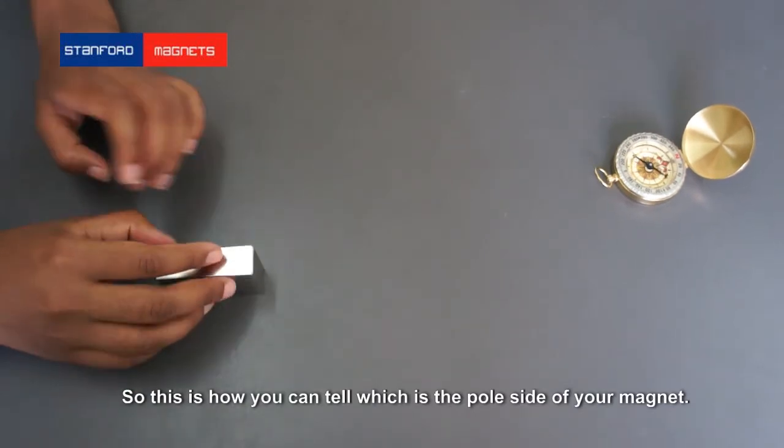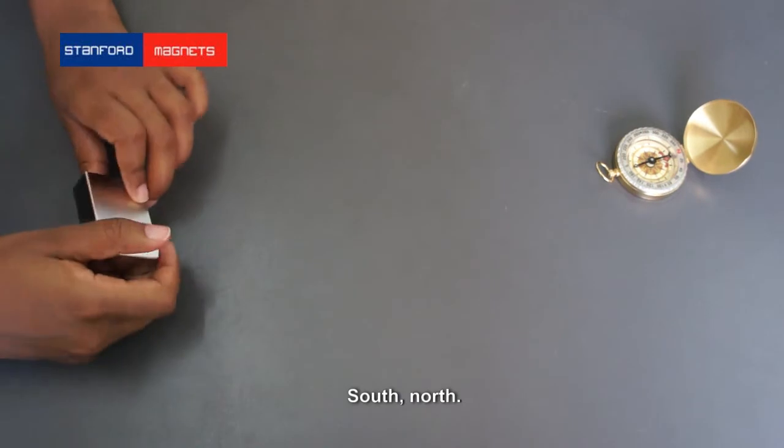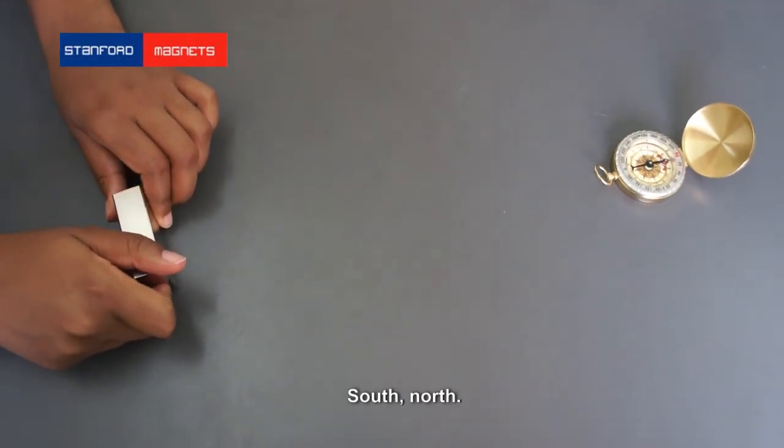If I can see which side moves, this is how you can tell which is on the side of your magnet. South, north. Here we go.